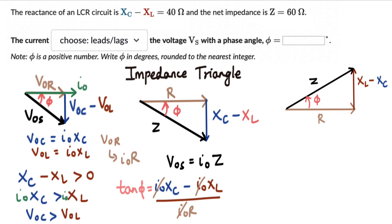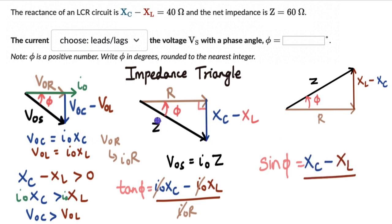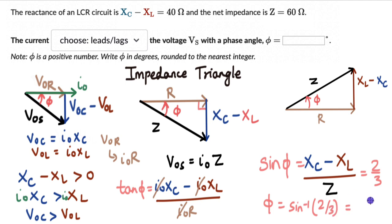Hopefully you have given this a try. In this case, we do not know the resistance, so we avoid using the base of the right-angle triangle. Instead, we write sin φ = perpendicular / hypotenuse = (XC − XL) / Z = 40 / 60 = 2/3. Therefore φ = sin⁻¹(2/3) = 42 degrees. The current in this case is again leading the supply voltage, as seen from the diagram, with a phase angle of 42 degrees.